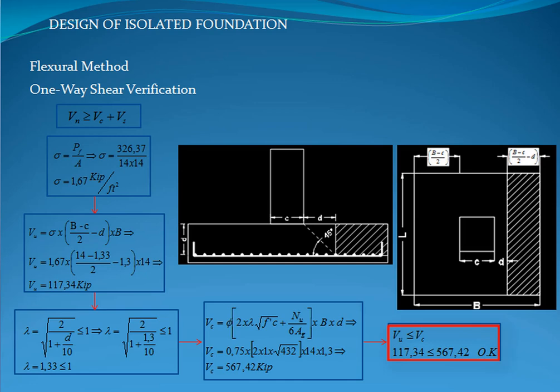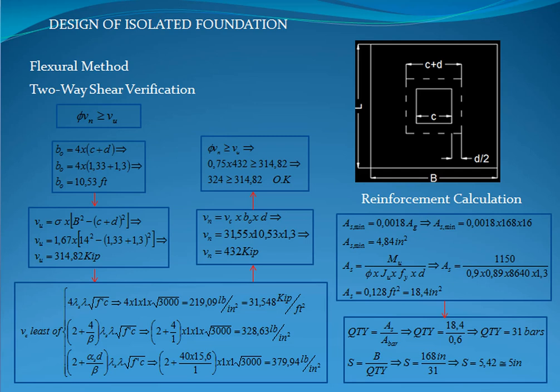The two-way shear verification is based on the idealized critical sections located at a distance of half d, as shown in the picture. The first thing to do is calculate the critical perimeter defined as 4 times c plus d, giving a result of 10.53 feet.